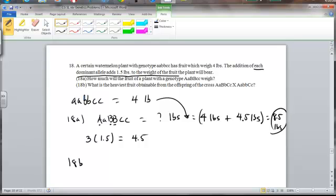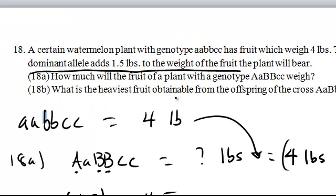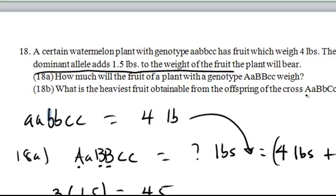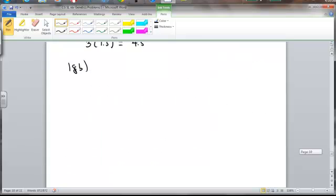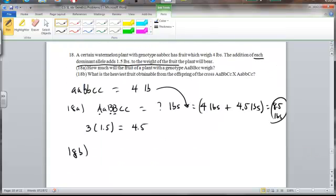Let's look at 18b here. What is the heaviest fruit obtainable from the offspring of a cross? Capital A, lowercase a, capital B, lowercase b, capital C, lowercase c, and capital A, lowercase a, lowercase b, lowercase b, capital C, lowercase c. Alright, so let's just set up that cross and see what happens.